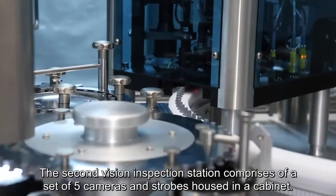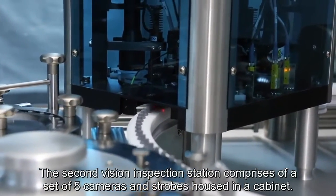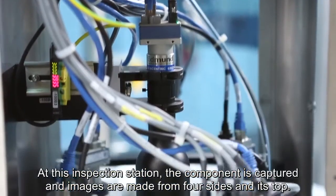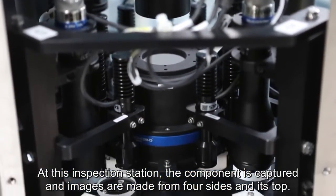The second vision inspection station comprises a set of five cameras and strobes housed in a cabinet. At this inspection station, the component is captured and images are made from four sides and its top.